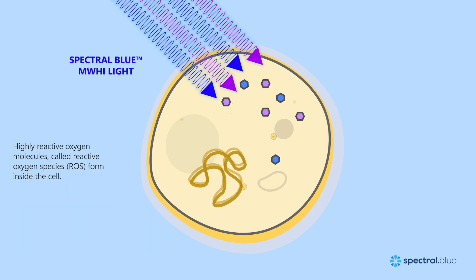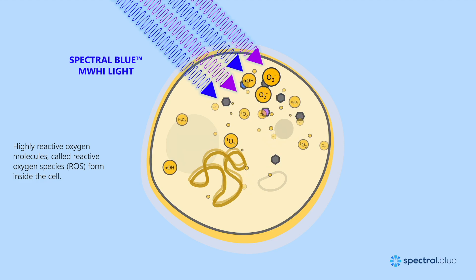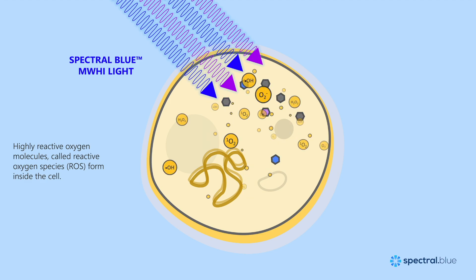When the light-absorbing compounds are activated, a chemical reaction cascade starts, where highly reactive oxygen molecules form inside the microbial cell. These oxygen molecules are called reactive oxygen species, or ROS, and include, for example, hydrogen peroxide, which is a widely known disinfectant.